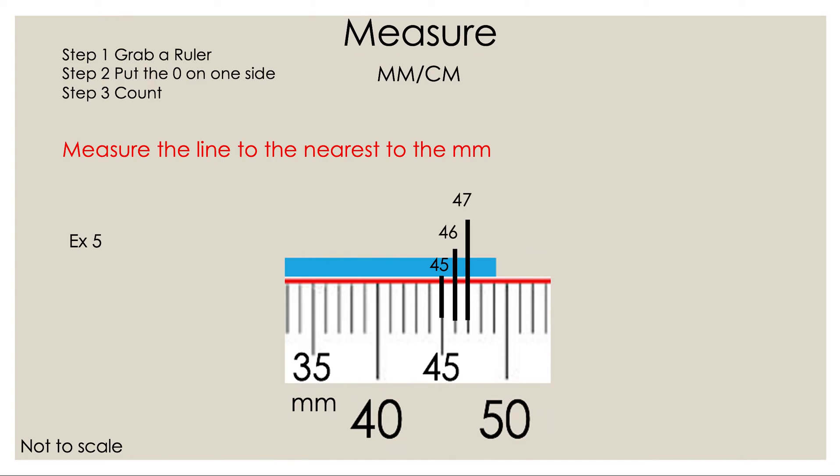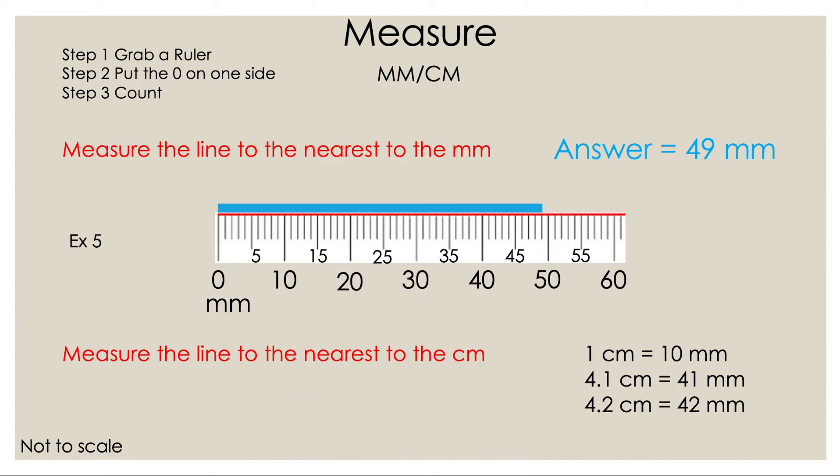46, 47, 48 and 49. So the length of that line to the nearest millimeter was 49 millimeters. Now what if we want to convert that to centimeters? Well if centimeters and millimeters are on the same line then all we have to do is move the decimal over one place to the left or divide by 10. So my answer is 4.9 centimeters.